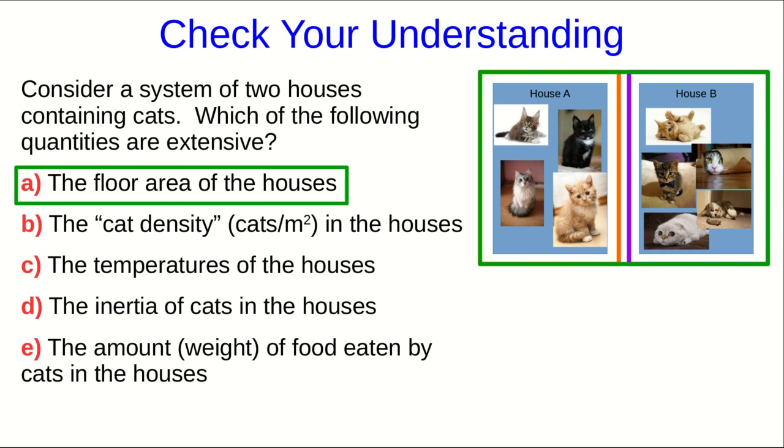Similarly, if there were 20 kilograms of cats in one house and 30 kilograms of cats in the other house, then I think you see that it makes sense that the system's inertia of cats would be the sum of those, 50 kilograms. That's extensive as well.